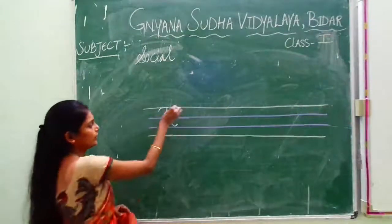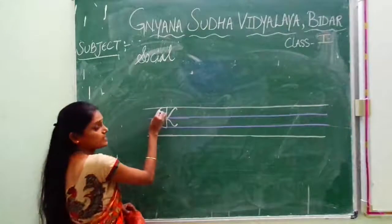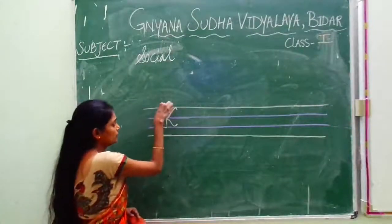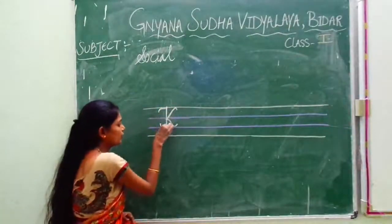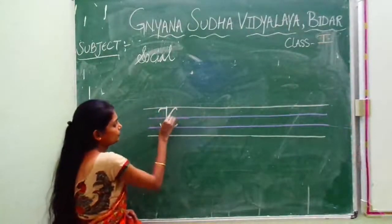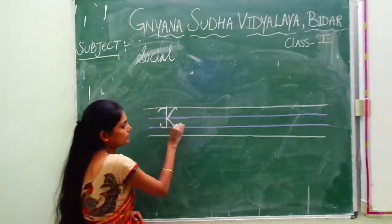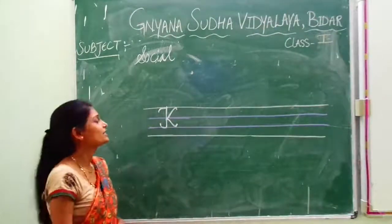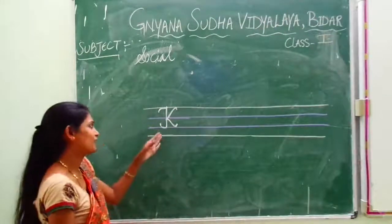What is this called? K. See, once again I am showing you — see carefully how I am writing. This is called K, capital cursive K.